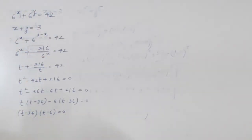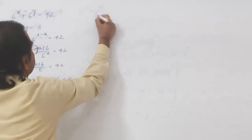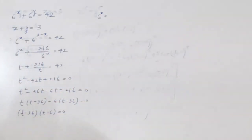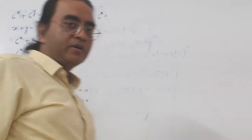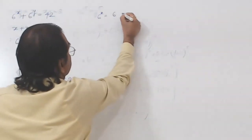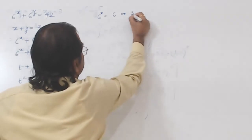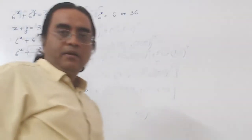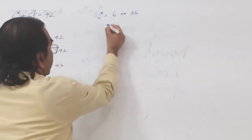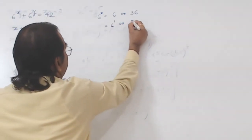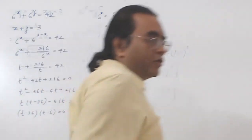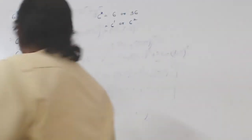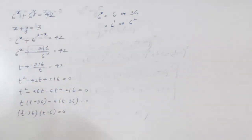So we have 6 to the power x equal to 6 or 36. That means 6 to the power 1 or 6 to the power 2. That means x is either 1 or 2.